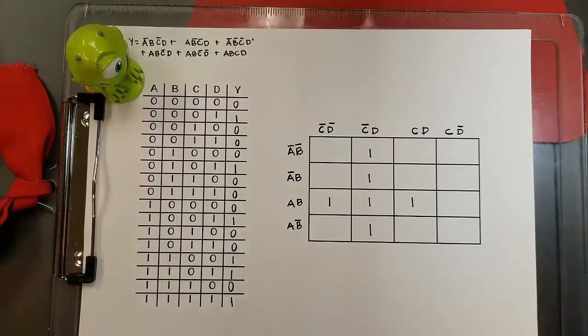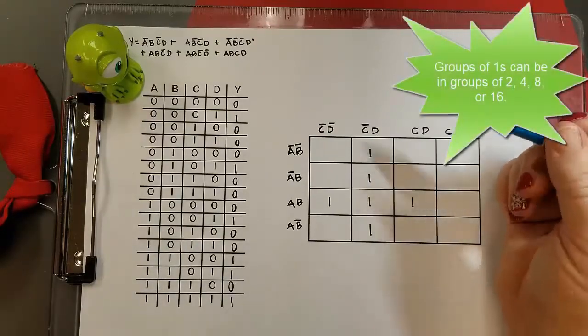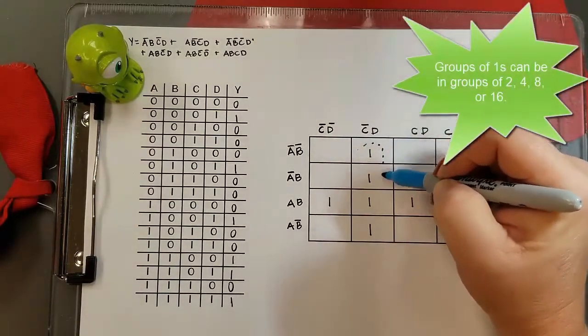Okay, so now we're going to create groupings in our K-map. We're looking for ones in groups of twos or in pairs.